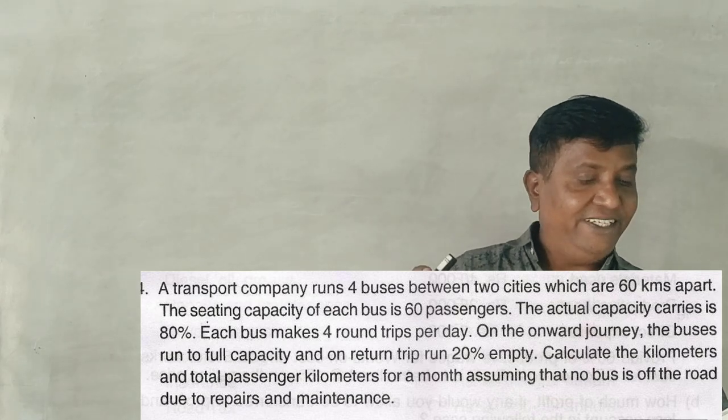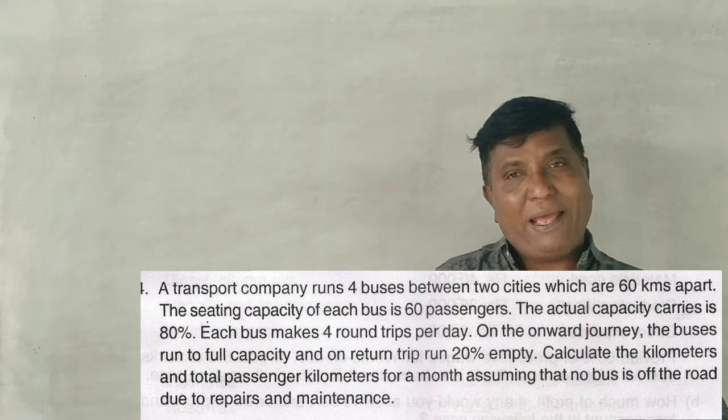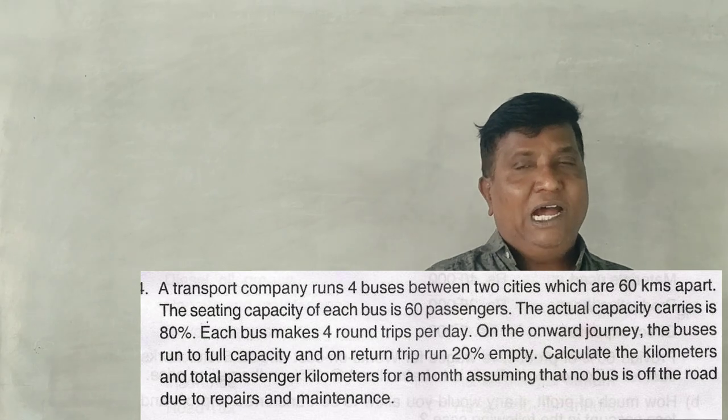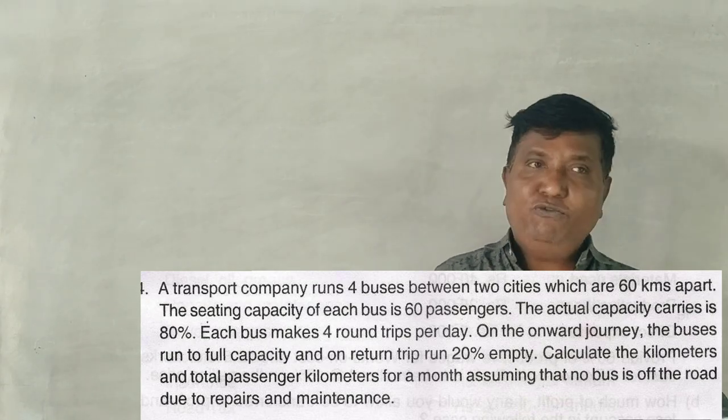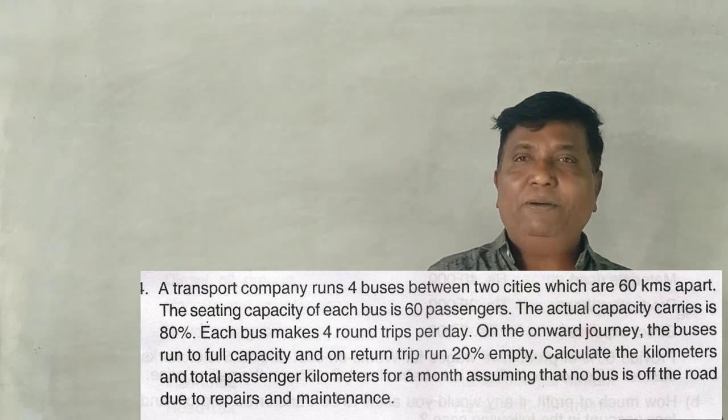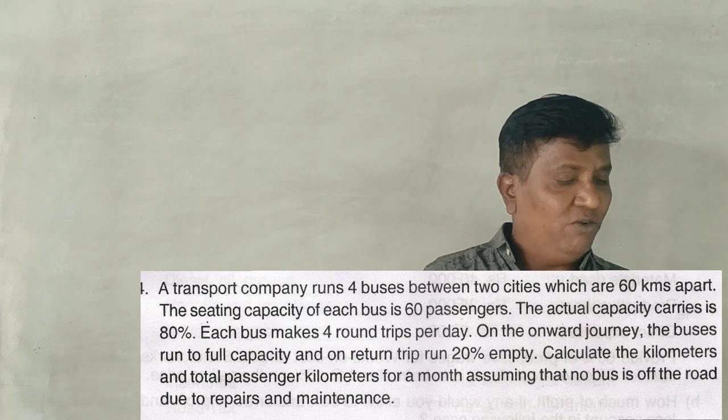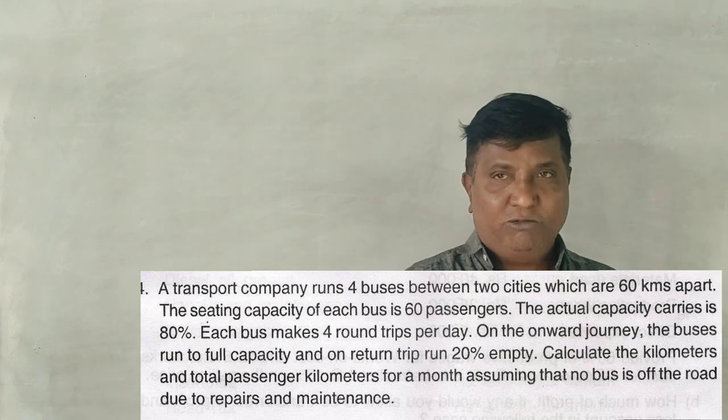The actual capacity carries is 80%. If you go to 60 passengers, it will be full, but at 80% of the bus it will be 48 passengers. So 80% of 60 passengers is 48. Correct?